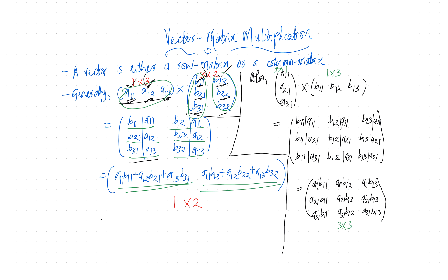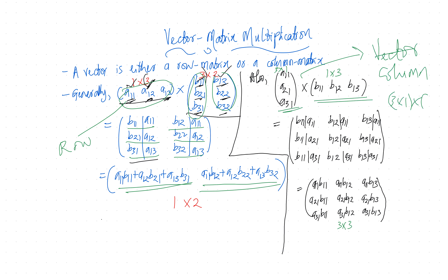Now if we consider a column matrix — here we had a row matrix as a vector, now we bring up a column matrix which is also a vector. Here we have a 3×1 matrix multiplied by a 1×3 matrix. Since 3×1 times 1×3 — taking the common one out — you end up getting a 3×3 matrix. So multiplying a 3×1 matrix by a 1×3 matrix gives you a 3×3 result.